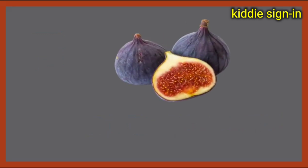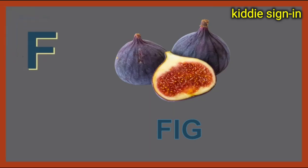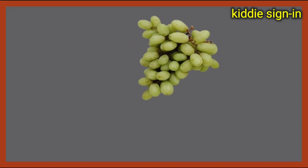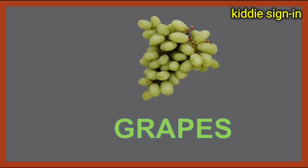Can you name this unique fruit? This is fig. F for fig. Now the next fruit is grapes. G for grapes.